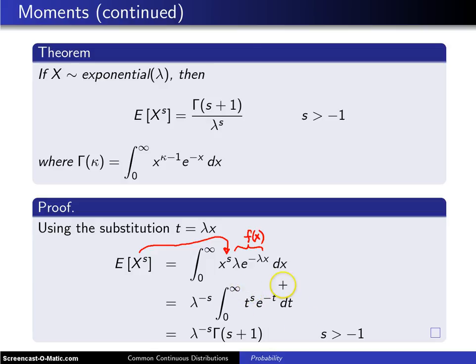This integral looks very close to our definition of the gamma function and it turns out it is simply the gamma function evaluated at s plus one multiplied by lambda to the minus s power. And that gives us the result up here in the theorem.